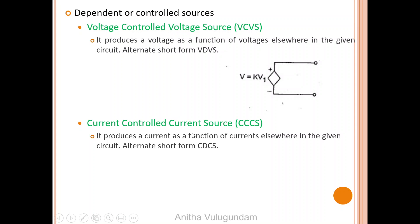Current controlled current source: it produces a current as a function of currents elsewhere in the given circuit. Alternate short form is CDCS — current dependent current source.